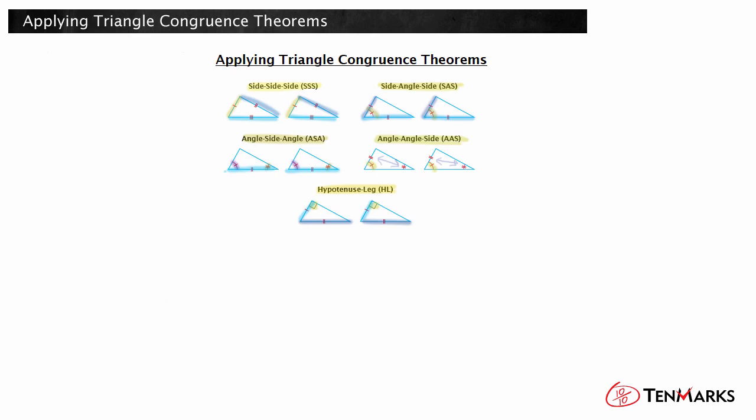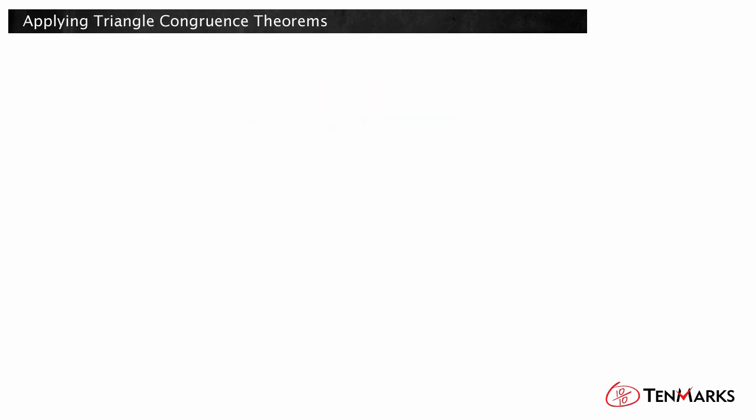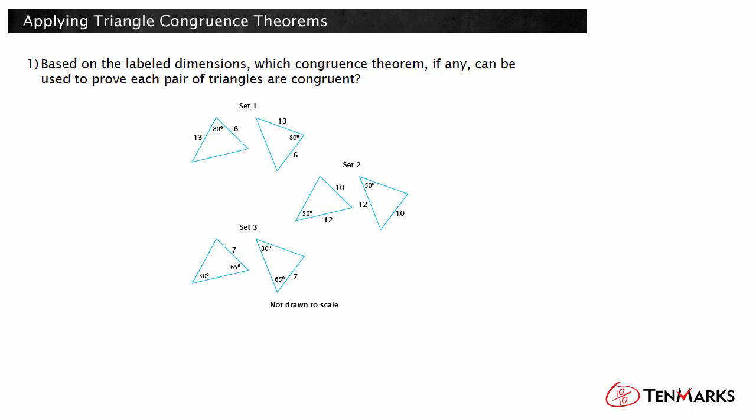Having one of these combinations of congruent parts is necessary and sufficient to prove the triangles are congruent. Let's look at some triangles. Based on the labeled dimensions, which congruence theorem, if any, can be used to prove each pair of triangles are congruent?